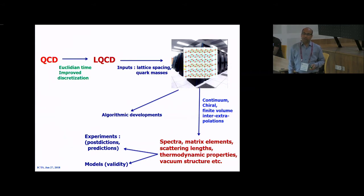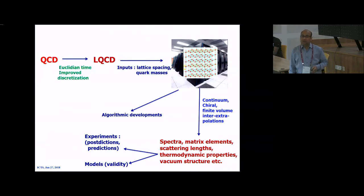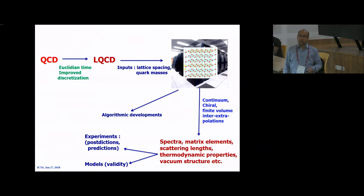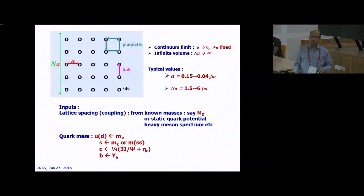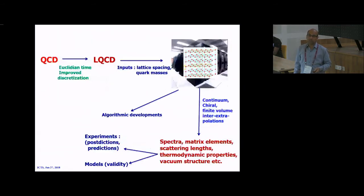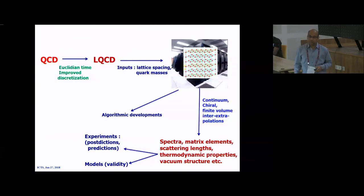In summary: we put QCD on Euclidean time with improved discretization to get lattice QCD. Input parameters are lattice spacing and quark masses. We put the theory on the computer and then take the continuum limit, chiral limit, and finite-volume extrapolation or interpolation — nowadays people can simulate at the physical point. There is a huge amount of algorithmic development. The output will be spectra, matrix elements, scattering lengths, thermodynamic properties, vacuum structure, and more. That can match with experiment — some post-dictions and some predictions.